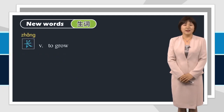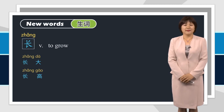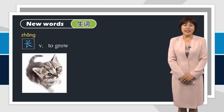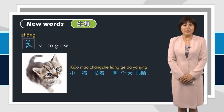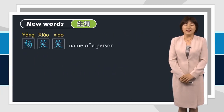长，to grow。跟我读：长，长大，长高。他长得很漂亮。The kitten has two big eyes — we can also use 长, we can say 小猫长着两个大眼睛。